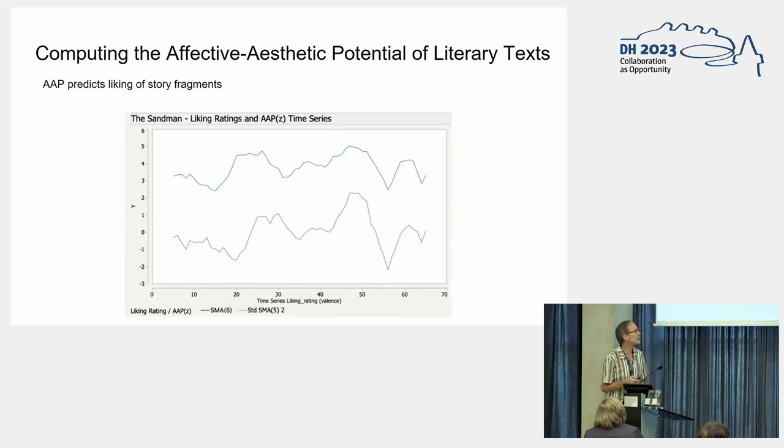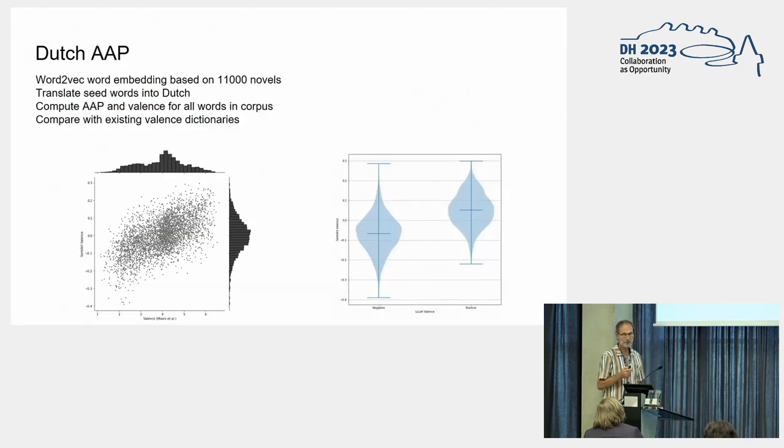And what really triggered us was this last graph, where Jacobs cut pieces of the Sandman story, a famous story in German literary history, in pieces of about 100 words, and had those segments rated by humans for their attractivity. Then he computed using the affective aesthetic potential the values of those sections. And you see there's a very big correlation and that the affective aesthetic potential is reasonably well able to predict the liking of the text fragments. So we thought that's something we can use for Dutch.